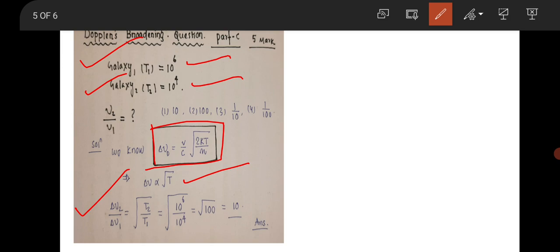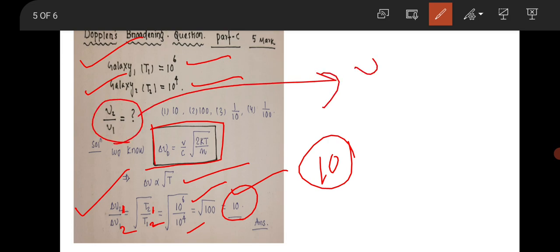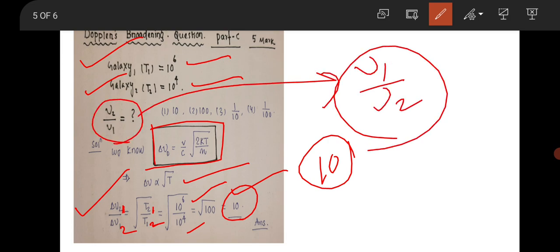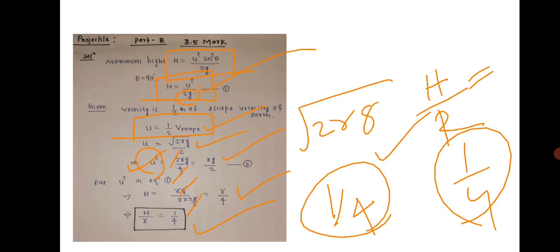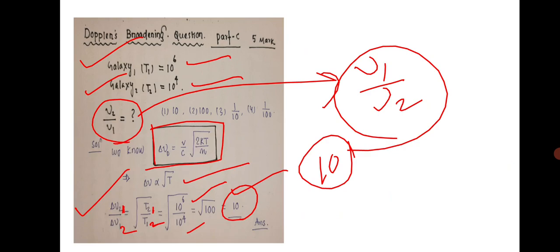Taking the ratio Δν₁/Δν₂ equals √(T1/T2) equals √(10^6 / 10^4) equals √100 equals 10. So if the question asks for Δν₁/Δν₂, the answer is 10. If it asks for Δν₂/Δν₁, the answer will be 1/10.